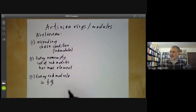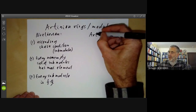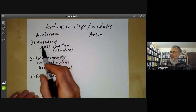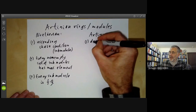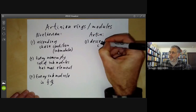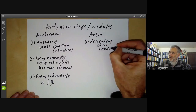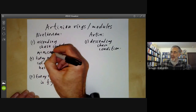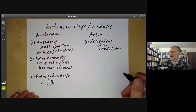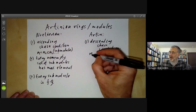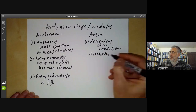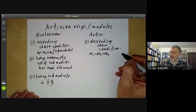There's an obvious dual set of conditions. We call a module Artinian if it satisfies the descending chain condition. The ascending chain condition says that any ascending chain of submodules, if these are all strictly increasing, the chain must be finite. In the descending chain condition, if you've got a chain of submodules, eventually this must stabilize and they must all be the same.